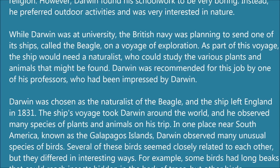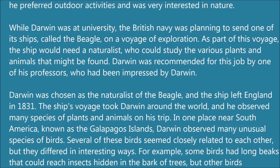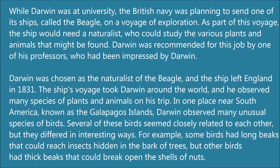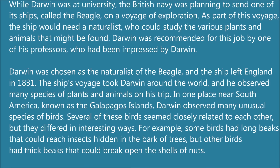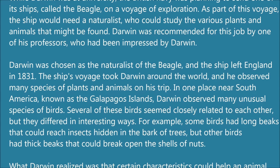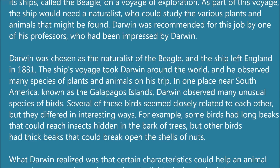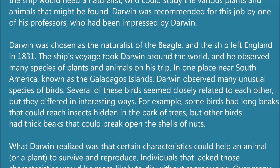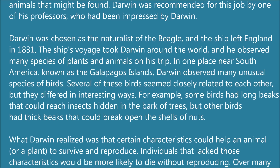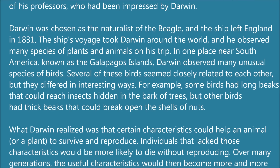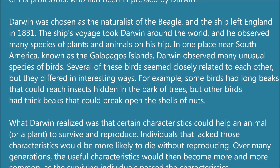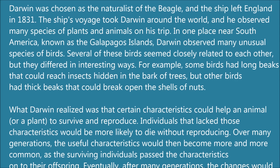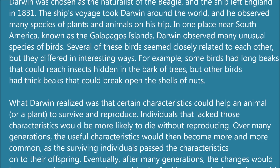The ship's voyage took Darwin around the world, and he observed many species of plants and animals on his trip. In one place near South America, known as the Galapagos Islands, Darwin observed many unusual species of birds. Several of these birds seemed closely related to each other, but they differed in interesting ways. For example, some birds had long beaks that could reach insects hidden in the bark of trees, but other birds had thick beaks that could break open the shells of nuts.